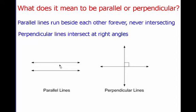Perpendicular lines, on the other hand, do intersect, and they intersect specifically at right angles. In case you forgot what that means, a right angle is a 90 degree angle.